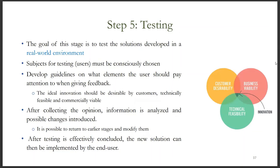The last step of design thinking is testing the product or solution. The goal of this stage is to test the solutions developed in a real-world environment. Subjects for testing — users — must be consciously chosen. Develop guidelines for testing. The ideal innovation should be desirable by customers, technically feasible, and commercially viable. After collecting opinions, information is analyzed and possible changes introduced. After testing is effectively concluded, the new solution can then be implemented by the end user.